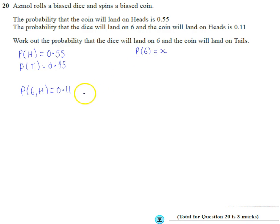So the probability of getting a 6 and then a head is the probability of getting a 6 multiplied by the probability of getting a head. So the probability, and we know this answer is 0.11.